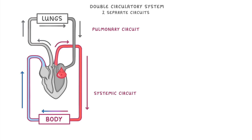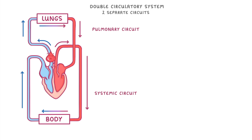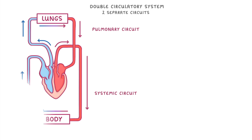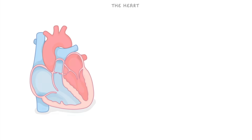Then there's the systemic circuit, where the blood flows from the heart around to all of our body tissues — like our muscles, brain, liver, and so on — and then flows back to the heart. So to put that together: blood is pumped from the heart around the lungs and back to the heart, and then it's pumped around the body and back to the heart, and that process keeps repeating.